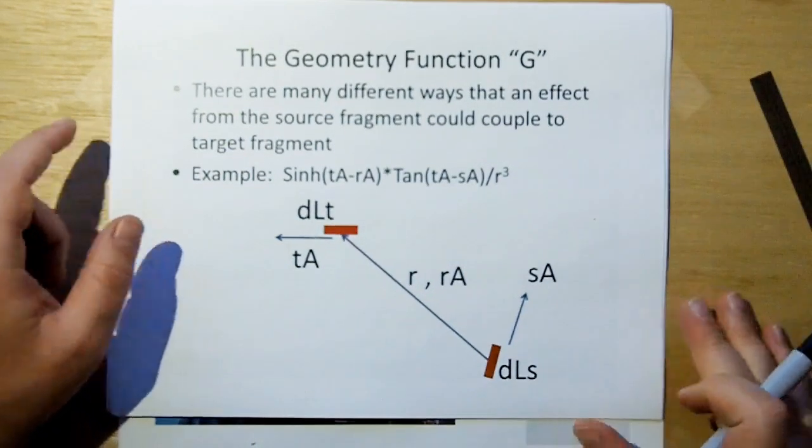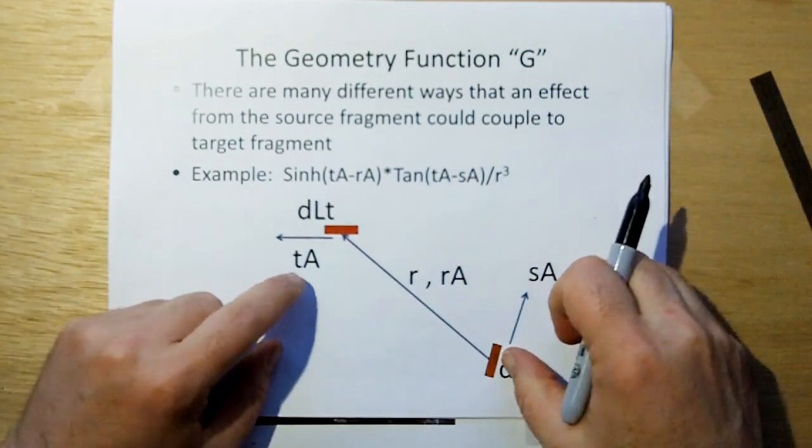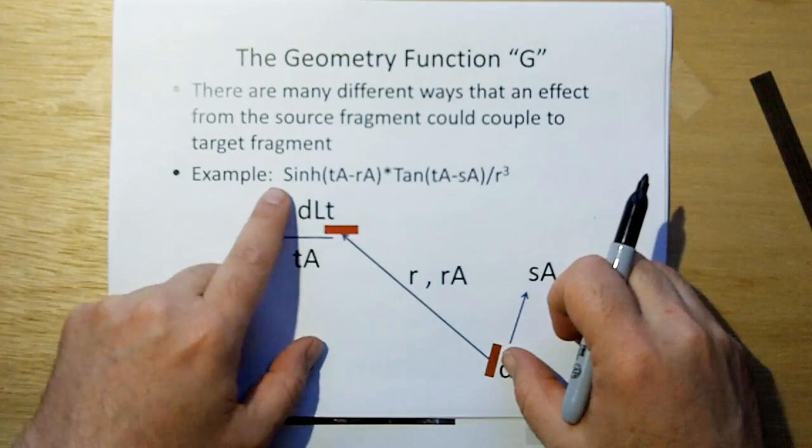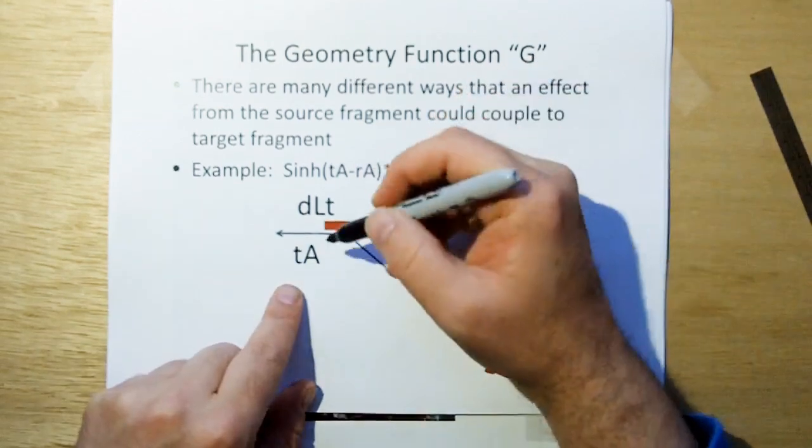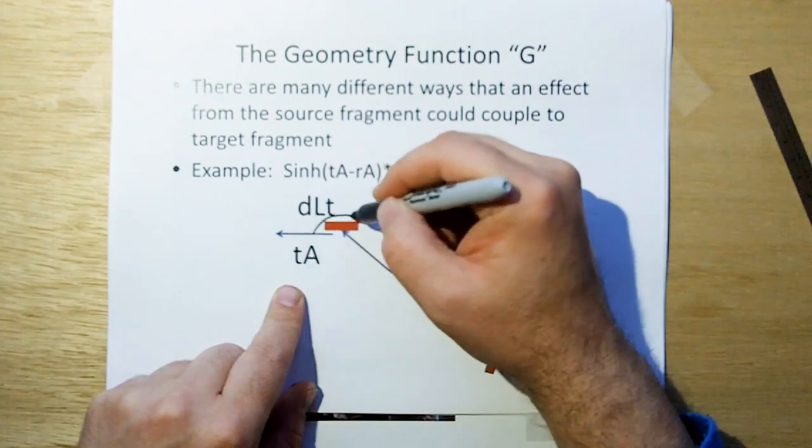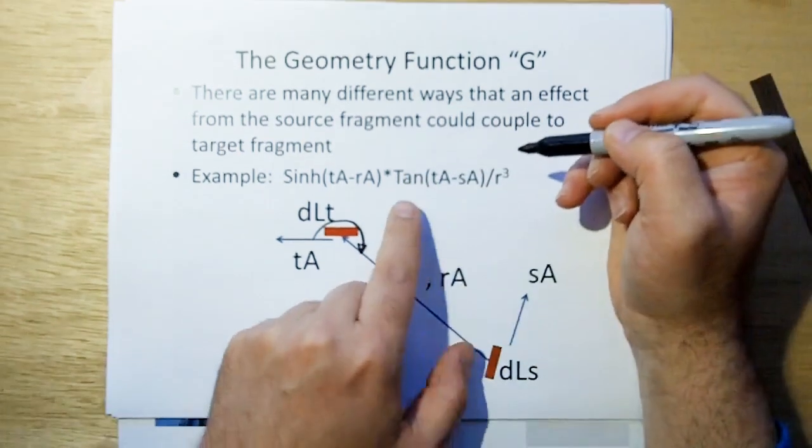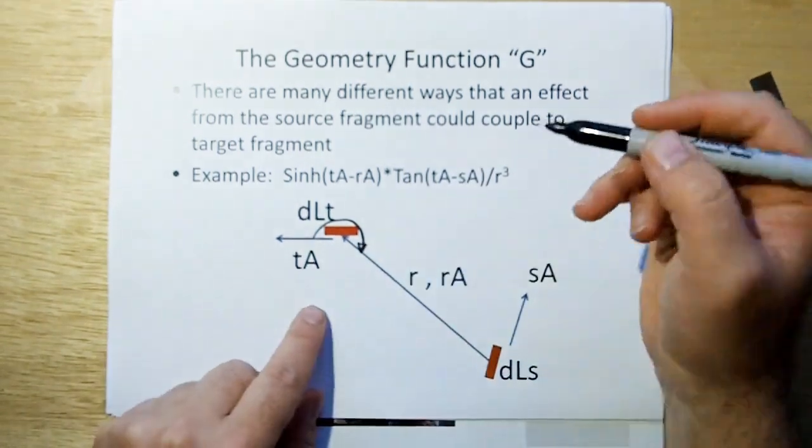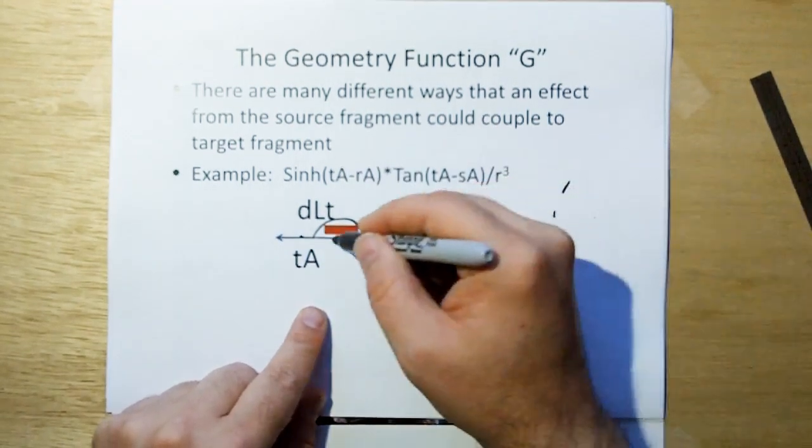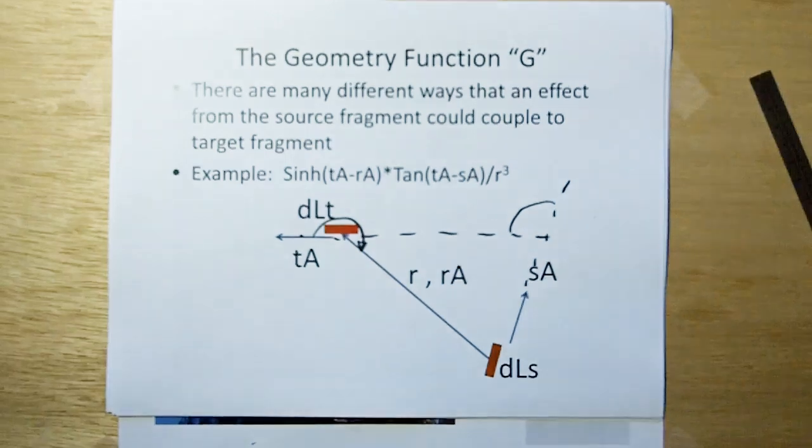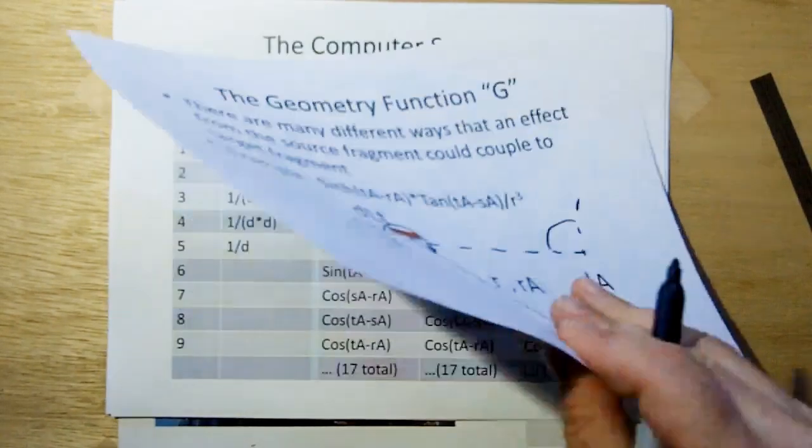Now, let me give you an example of the geometry function. For example, we could say that the way one fragment relates to another in space is the sine of the angle between the target angle and the radial angle, which would be target angle minus radial angle, which would probably be this, times the tangent of the target angle minus the source angle, which would be this angle here. I know it's a little convoluted, but that's the way we do it.